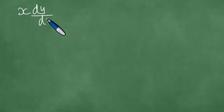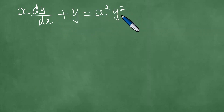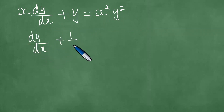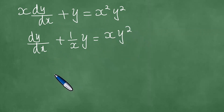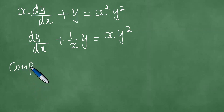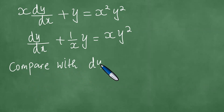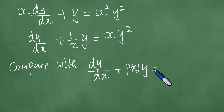We note that we have been given x dy/dx plus y, which equals x squared y squared. We divide through by x, getting dy/dx plus 1 over x times y, which equals x times y squared. Now we have transformed the differential equation into this standard form. At this point, we compare with the standard Bernoulli form: dy/dx plus p(x) y, which equals f(x) y to the power n.